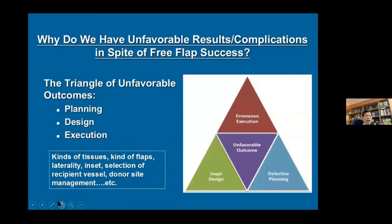We have defined unfavorable results or complications in spite of free flap survival as originating from three angles — the so-called triangle of unfavorable outcome — which includes planning, designing, and adjudication of the surgery. This includes the kind of tissue chosen, the flap type, laterality, inset, selection of recipient vessels, and donor site management.